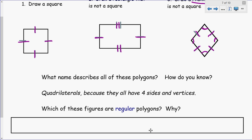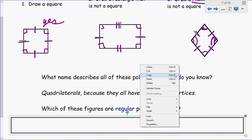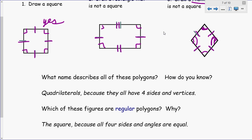So what name describes all of these polygons and how do you know? Well, they're all four-sided shapes. So hopefully you thought of the word quadrilateral because quadrilaterals all have four sides and vertices. If you thought of that, good job. And which of these figures are regular and why? Take a look at that definition of regular again. Regular has all sides the same and all angles the same. Well, the first one, the square has all four sides the same. And we know that on a square, the angles are all equal also, 90 degrees. So that definitely is regular. For the rectangle, the angles are all the same, but not the sides. So that one's not regular. And the rhombus has all four sides the same, but not the angles. See how these are acute and these are obtuse. So no, that's not regular. So the only regular one of the three that we drew is the square because all four sides and angles are equal.